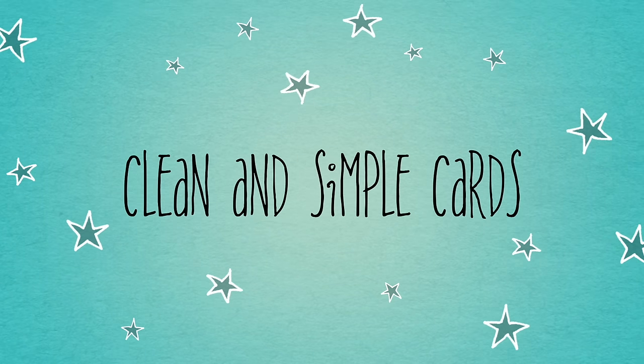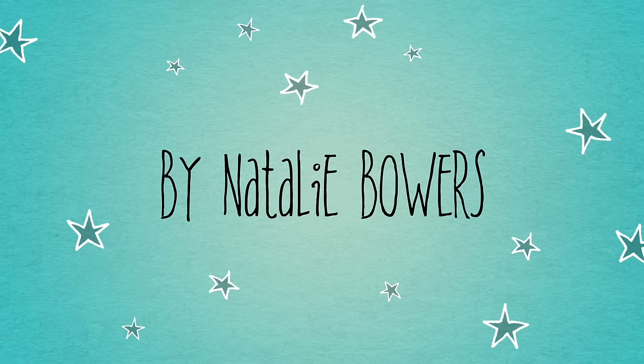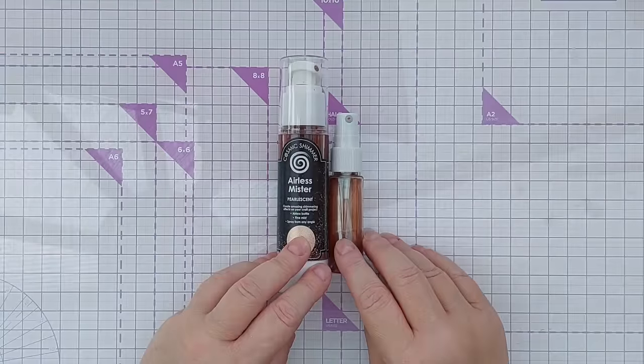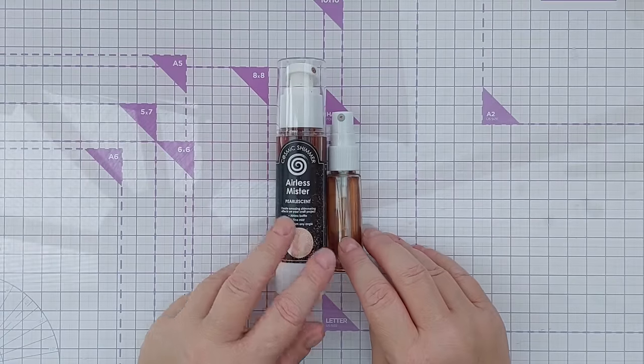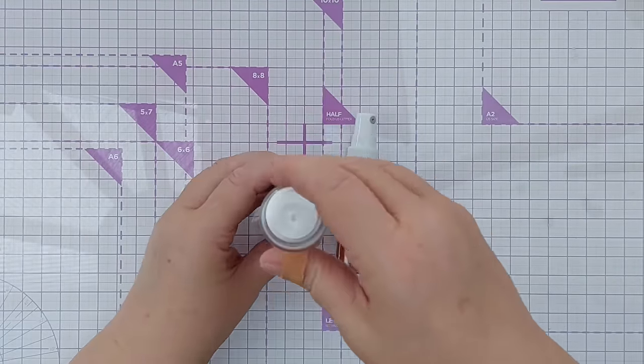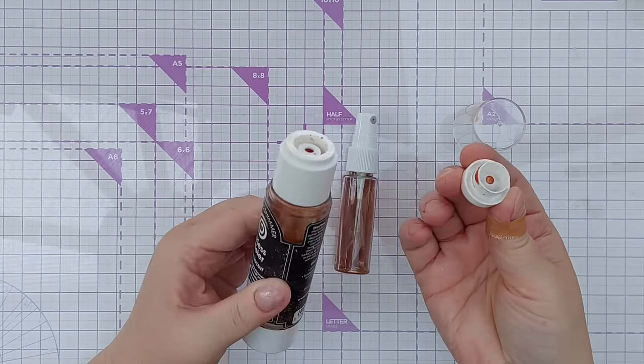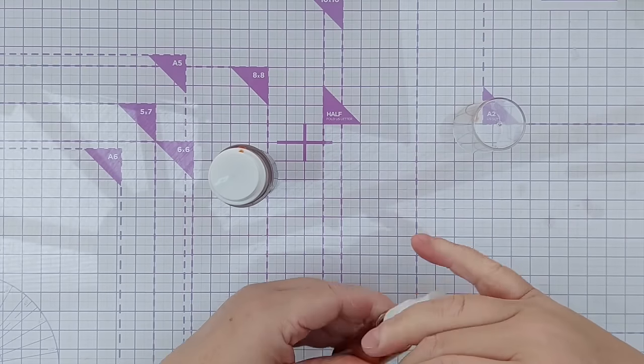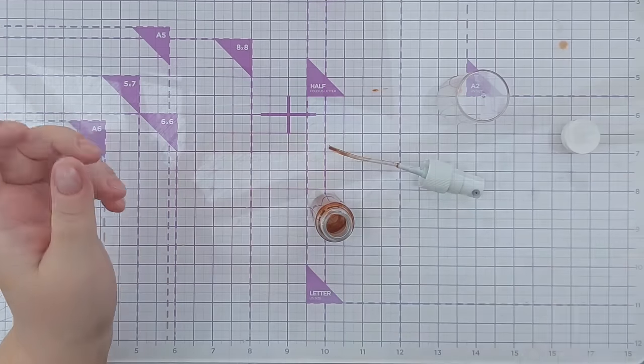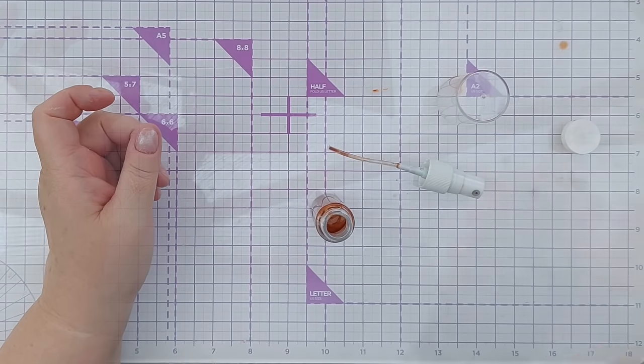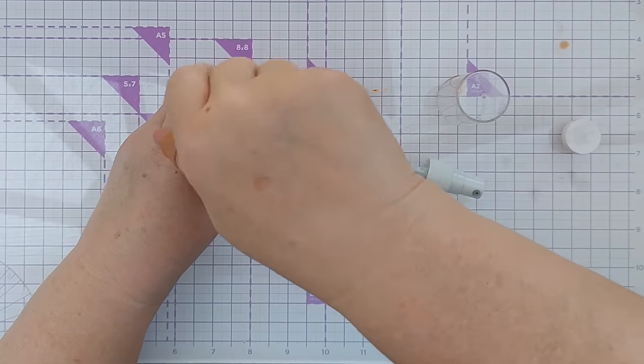Hello crafty friends, welcome to today's video. In my last video you might recall that I managed to break my Cosmic Shimmer airless mister and I ended up decanting some of the contents into this little mister bottle that I had lying around. It's just a travel bottle that I had spare.